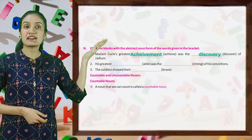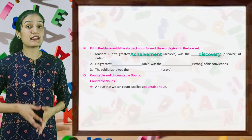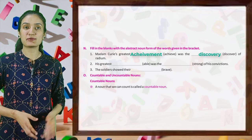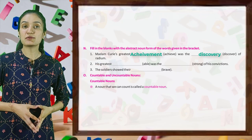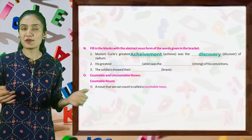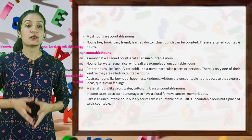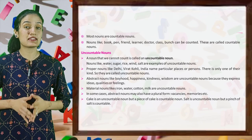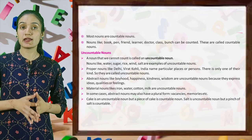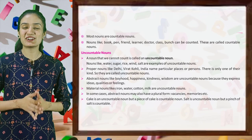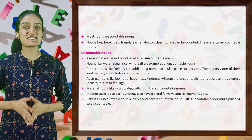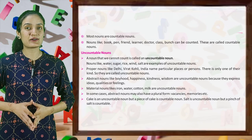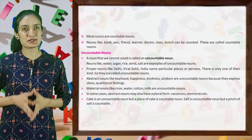Now next is countable and uncountable nouns. First is countable nouns. A noun that we can count is called a countable noun. Most nouns are countable nouns. Nouns like book, pen, print, learner, doctor, class, bunch can be counted. These are called countable nouns.